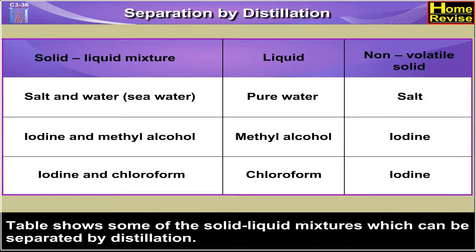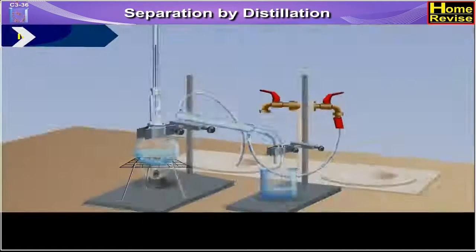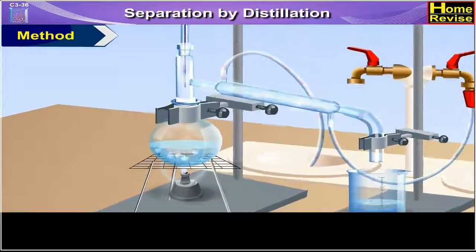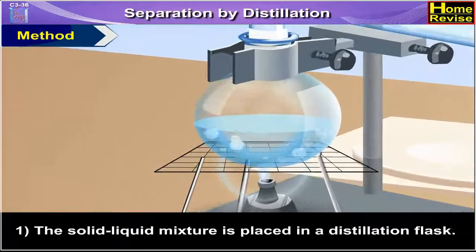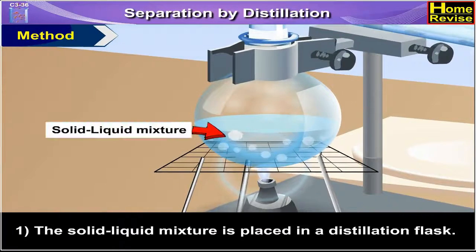The table shows some of the solid-liquid mixtures which can be separated by distillation. Method 1: The solid-liquid mixture is placed in a distillation flask.